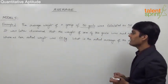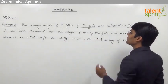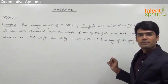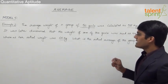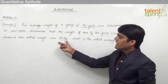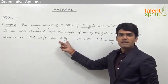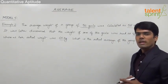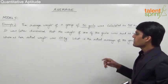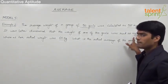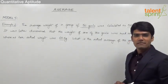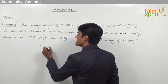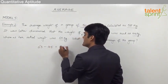There are 50 girls in the group and their average was calculated as 58 kg. But later it was found that for one of the girls whose actual weight was 65 kg, the reading was taken as 45. So while finding the average, her weight was taken as 45 instead of 65. The difference between 45 and 65 is 20 kg.